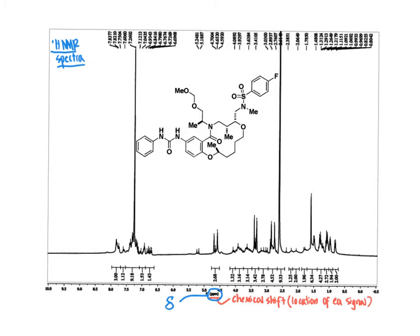Where we see a particular type of proton show up along the x-axis is described as the chemical shift. In the next video, we will get into more depth about what factors determine exactly where along this x-axis we see these signals — in other words, what determines signals toward the zero end versus closer to 10 or 12 ppm. Another term we'll be using throughout is multiplicity, which we can also refer to as the splitting pattern.